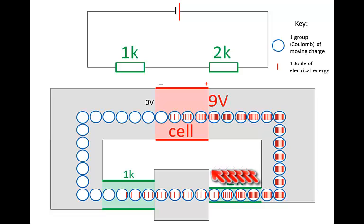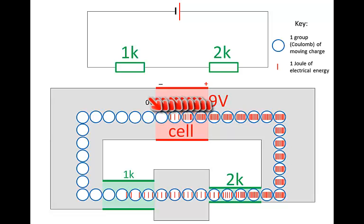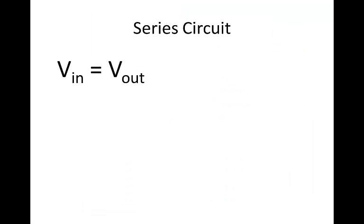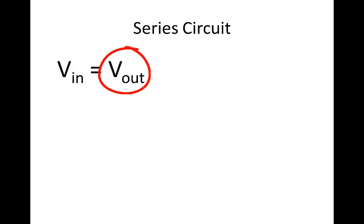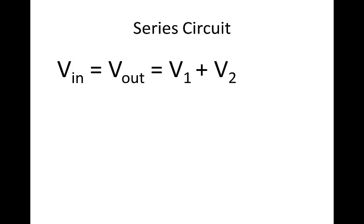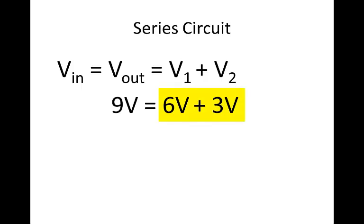How much voltage did they get rid of as they went through the 2K resistor? 6 volts. How much through the 1K resistor? 3 volts. 3 volts plus 6 volts equals 9 volts — the amount of voltage given is the same as the amount lost. We can write that as the equation: V_in equals V_out. V_in is the voltage the cell gives the charges, and V_out is the sum of voltage that each resistor takes away — 6 volts plus 3 volts.